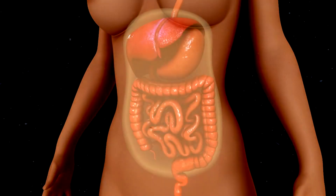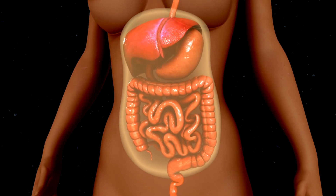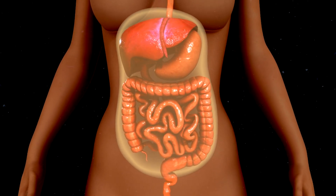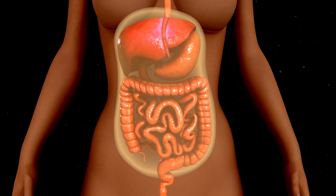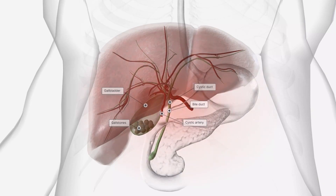The peritoneum is a protective membrane that covers the inner wall of the abdomen and most of the abdominal organs. When this tissue becomes inflamed, either partially or completely, it leads to a condition called peritonitis.